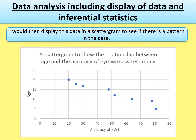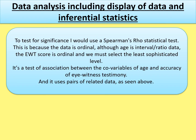For inferential statistics, say: 'To test for significance I would use Spearman's rho statistical test,' then justify why. In this case it is because the data is ordinal — although age is interval/ratio data with a specific unit of measurement, the eyewitness testimony score is ordinal, and we must select the least sophisticated level of measurement. Because one co-variable is ordinal, we use Spearman's rho. It is a test of association between the co-variables of age and accuracy of eyewitness testimony, and uses pairs of related data as shown in the table above.